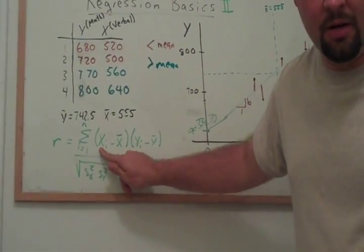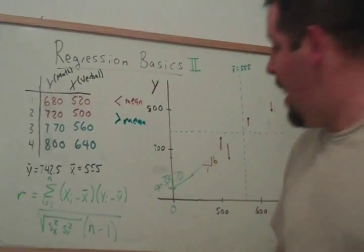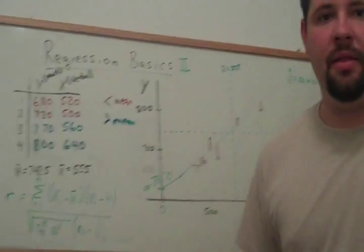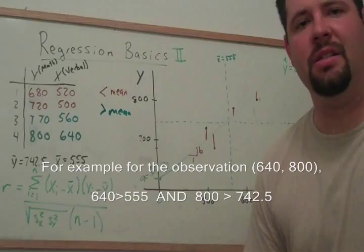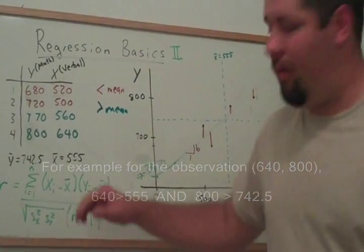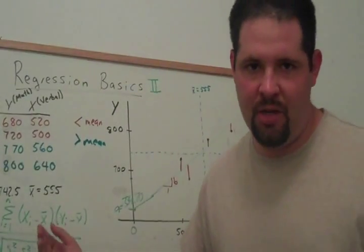Now notice that if x for a particular observation is bigger than its mean and y is bigger than its mean—that is, if they are both blue—we're multiplying two positive numbers together. So what we'll get is a positive contribution to this sum.